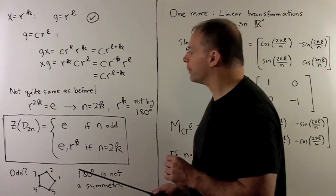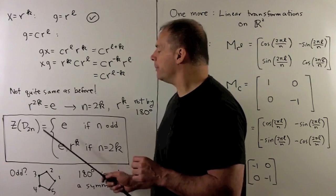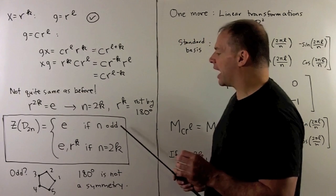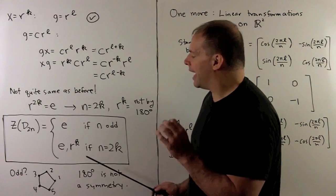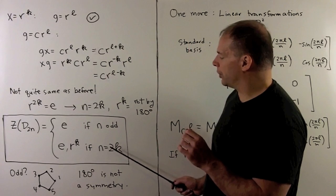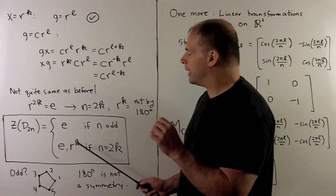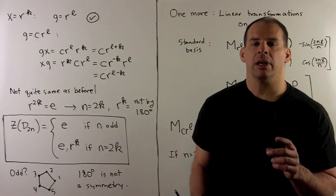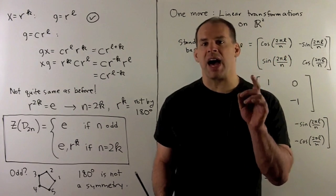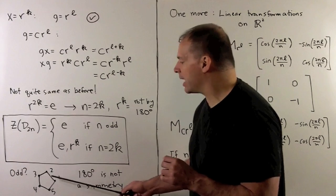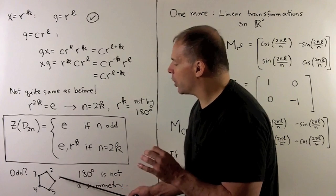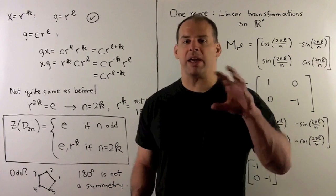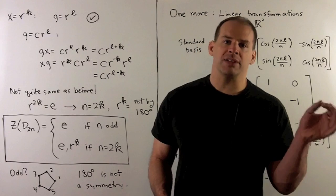Our answer is the center of D2n is the identity if n is odd. If n is even, equal to 2k, then we have the identity and rotation by 180 degrees. See what's missing when n is odd? Here we can consider the pentagon. Note, if we rotate by 180 degrees, the pentagon doesn't go back to itself, so that's not a symmetry.